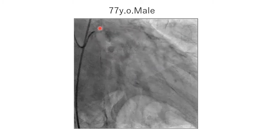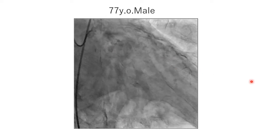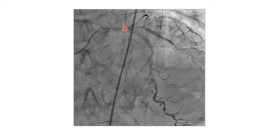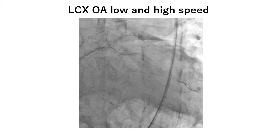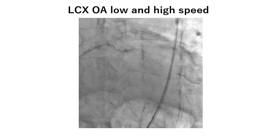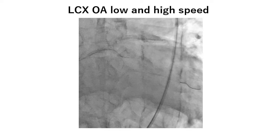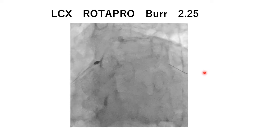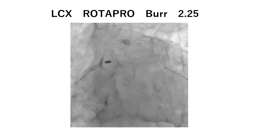The case is a 77-year-old male. Calcium is visible in both LAD and circumflex, and the circumflex is a very tortuous lesion. Severe LMT stenosis was also observed, along with severe stenosis at the orifice of the circumflex. Using a glide assist, the orbital atherectomy catheter was advanced deeply into the LCX and pulled back until the LCX orifice, followed by rotablation at the circumflex orifice using a 2.25 mm burr.